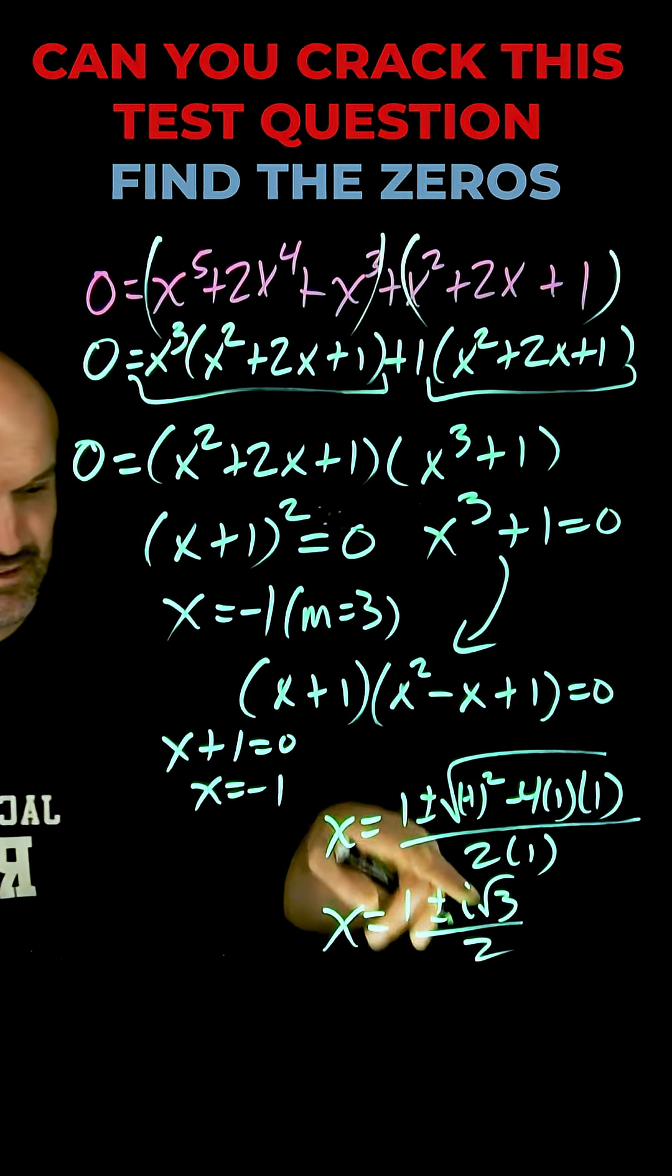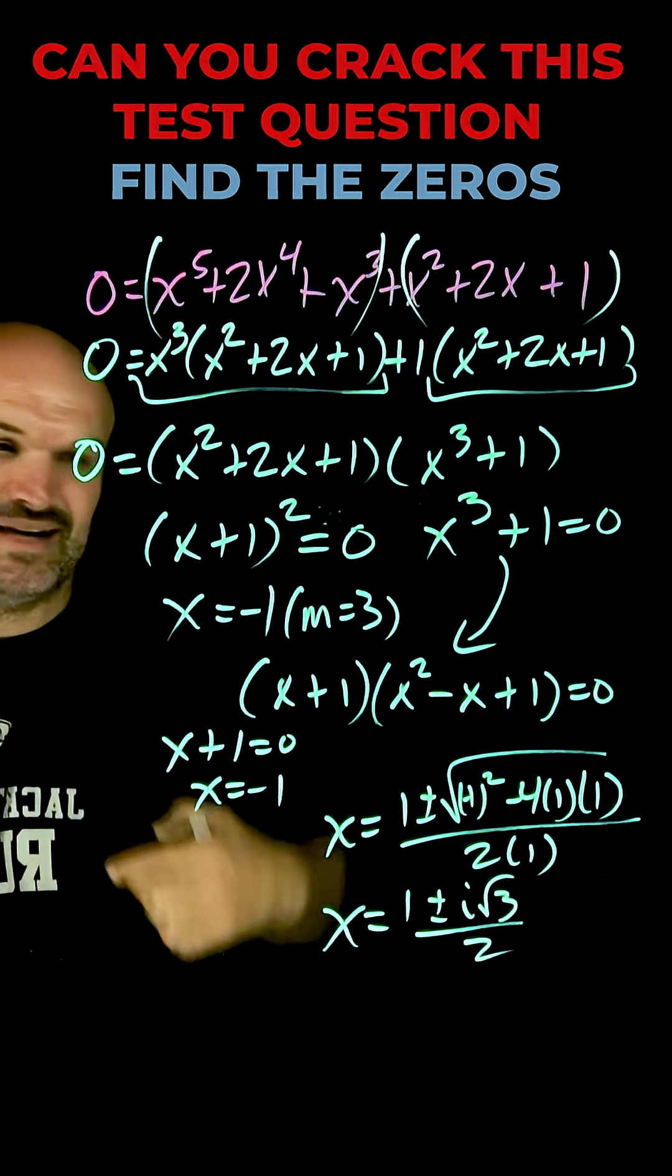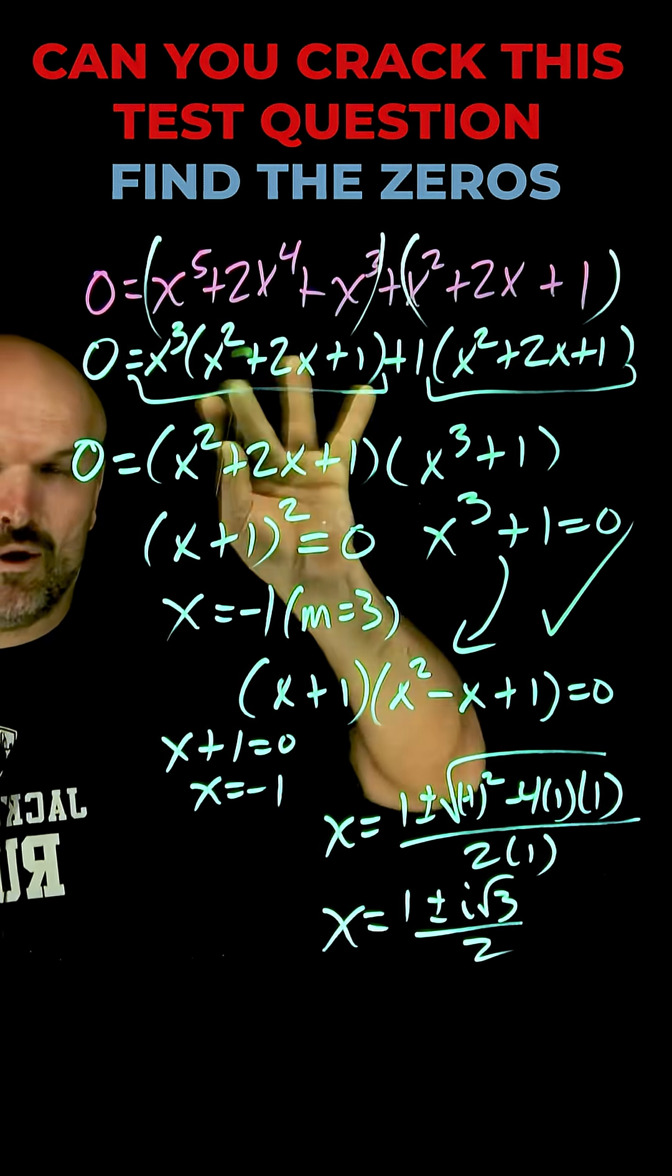And there you have it ladies and gentlemen. We have two solutions over here and three of the zeros over here which is all repeated multiplicity. That is how you find the zeros of a polynomial by factoring with six terms.